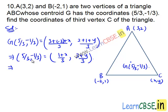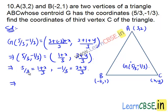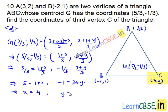Equating the x coordinates, we get 5 divided by 3 equals 1 plus x divided by 3. Equating the y coordinates, we get minus 1 divided by 3 equals 3 plus y divided by 3. Multiplying both sides by 3, we get 5 equals 1 plus x, and minus 1 equals 3 plus y. This implies x equals 5 minus 1, that is 4, and y equals minus 1 minus 3, that is minus 4.